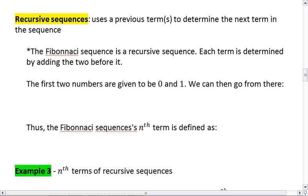A really common and familiar example for people is the Fibonacci sequence. This is a recursive sequence. Each term is determined by adding the two before it. So if we look, the Fibonacci sequence would be 0, 1, 1, 2, 3, 5, 8, 13, 21, 34, and so on.